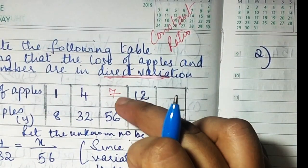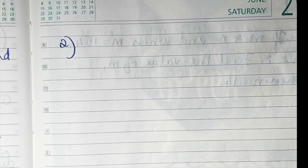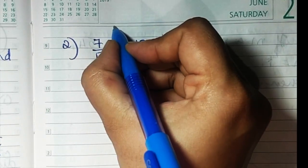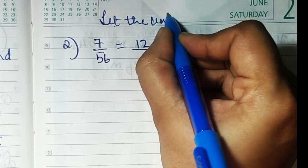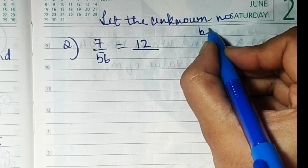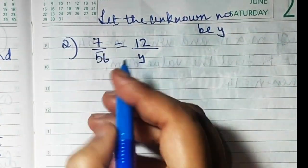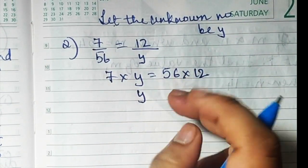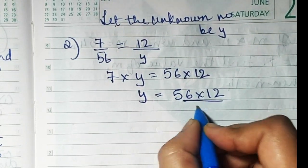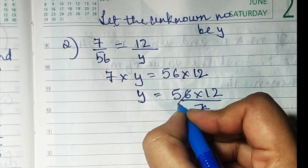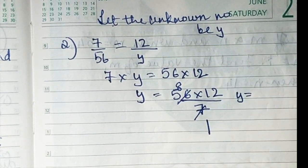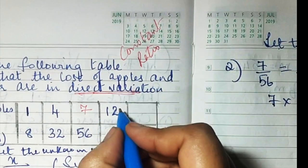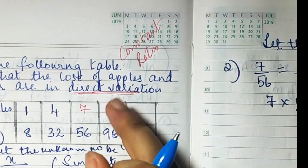For the next unknown, we have 7 upon 56 and 12 upon an unknown value. Let the unknown number be Y. So 7 upon 56 equals 12 upon Y. Cross multiplying: 7 into Y equals 56 into 12. So Y equals 56 into 12 divided by 7, which gives Y equals 8 into 12, therefore Y equals 96.